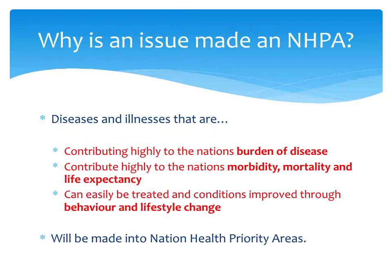We touched on why a National Health Priority Area is established — making significant gains in health. Other major reasons include that they all contribute highly to the national burden of disease, as well as to health statistics such as morbidity, mortality, and life expectancy. Importantly, through primary and secondary prevention we can improve many of these diseases through changes in lifestyle and behaviour, particularly in Australia.